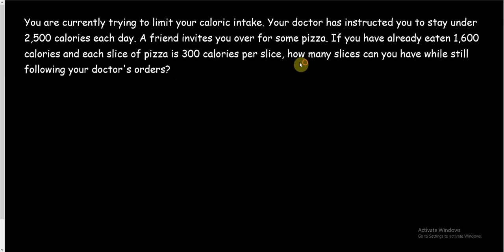Your doctor said stay under this many calories. You've had lunch and breakfast, you're going over for some pizza for supper, and you need to figure out how many slices you can eat. The question is how many slices, so that would be our variable. Let's let x equal slices of pizza. We need to stay under 2500 calories, so under 2500 would be less than 2500. You've already eaten 1600 calories, and each slice of pizza is 300, so this is your starting amount. Here's our rate, for each pizza we're going to get 300 more calories. So 300x plus 1600 is less than 2500.